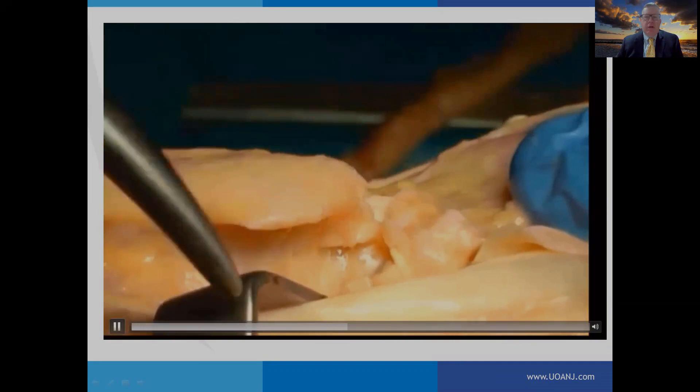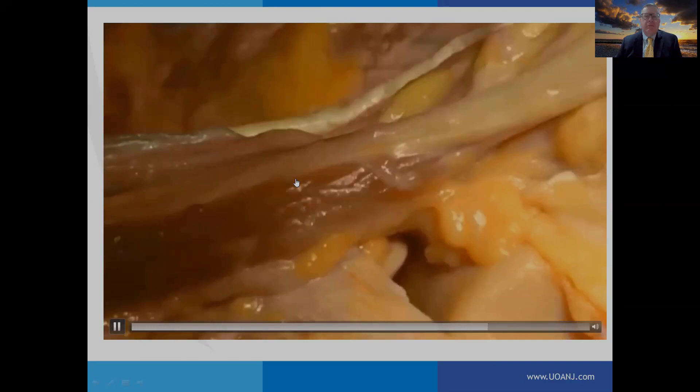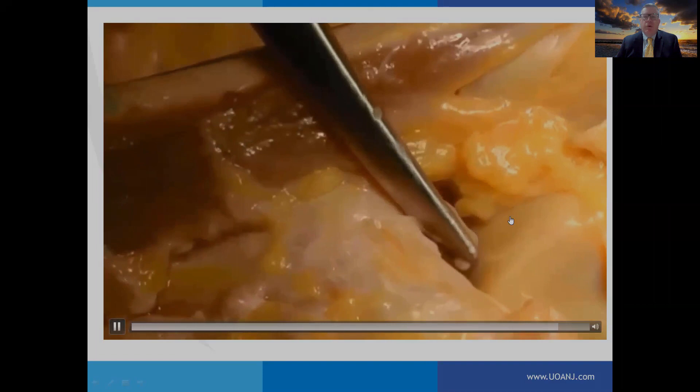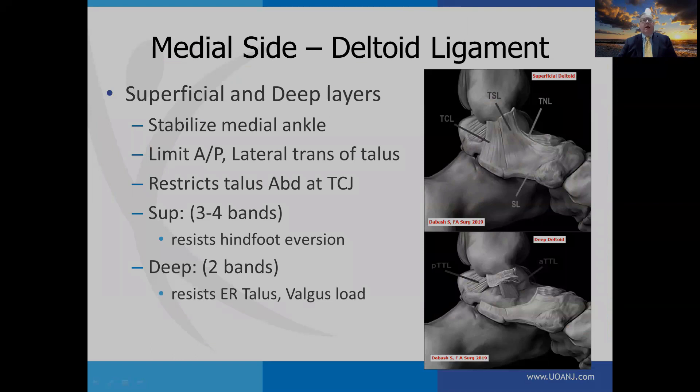When you section the calcaneofibular ligament, you'll notice a little bit of lateral translation and increased motion that occurs to the subtalar joint. With some soft tissue resected, you can see the lateral shoulder and how the lateral shoulder of the talus may be injured as it has increased tilt and increased external rotation with injury of the subtalar joint and increased lateral laxity.